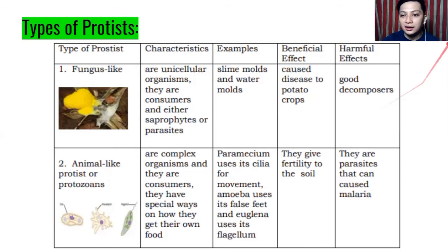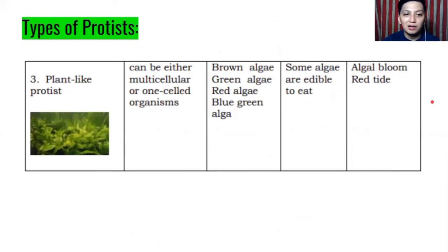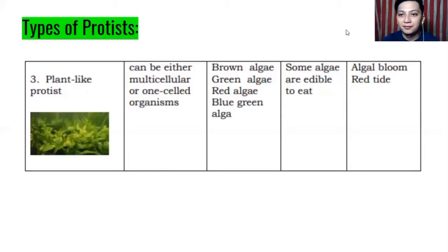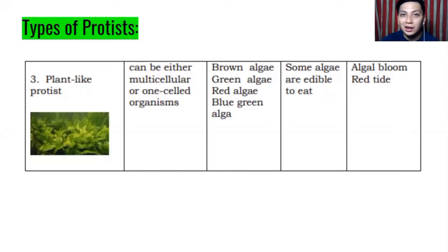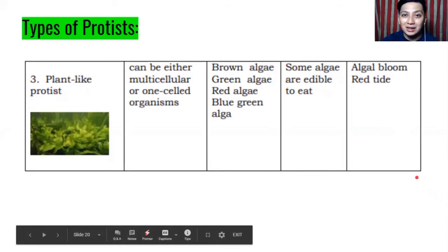Plant-like protists can be either multicellular or one-celled organisms. Examples are algae — like seaweeds found in the ocean. Types include brown algae, green algae, red algae, and blue-green algae. Blue-green algae are also known as cyanobacteria. Some algae are edible, but others are not — like those that cause red tide. Red tide is caused by algal blooms of red algae, and consuming affected shellfish can cause diseases.